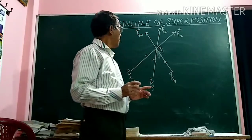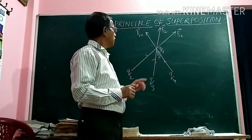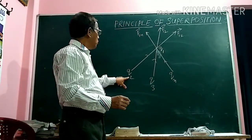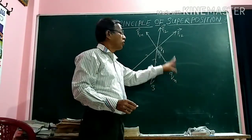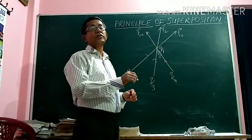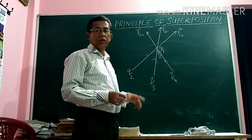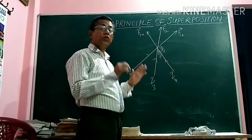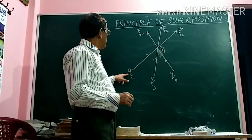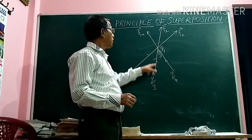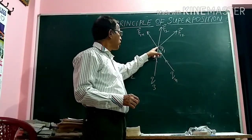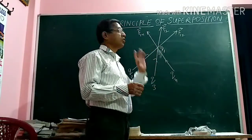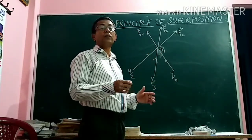Suppose Q1 is a charge placed here, and here are Q2, Q3, Q4, Q5, and up to QL number of charges. All charges apply force on Q1. Suppose Q2 applies force on Q1 — that is F12 — Q3 applies force on Q1 — that is F13 — Q4 applies force on Q1, and so on up to QN applies force on Q1. The total force exerted on charge Q1 can be found with the help of the Principle of Superposition.